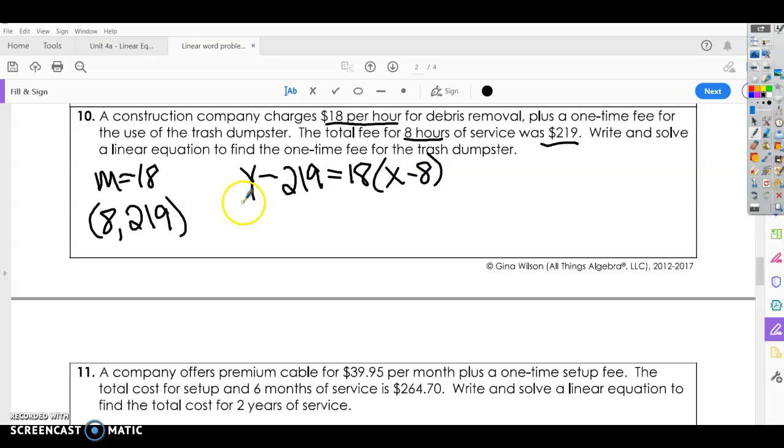The cost depends on how many hours they work. So again, we're doing point slope. So I'm going to do y minus, my y is my second number in my ordered pair. So 219 equals my slope times x minus x1, which is 8 in this case. So simplify or clean this up a little bit. y minus 219. Let's distribute 18 times x and 18 times negative 8. What is 18 times negative 8? Negative 144. Now I need to add 219 to both sides. So y equals, this cancels, 18x. And then negative 144 plus 219 equals $75.